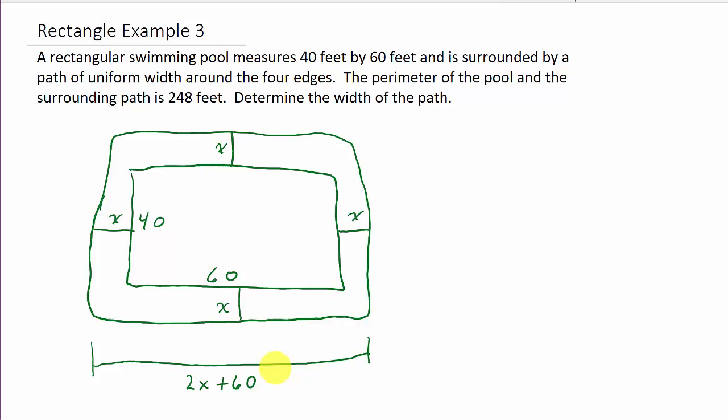Now do you see how we get that? If this is 60 plus x plus this x, then x plus x is 2x plus 60. So there's that width there.